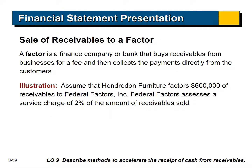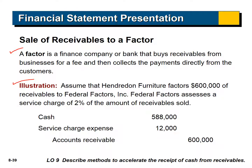The final way to dispose of a receivable is to sell it. If it takes too long to collect, you need your money now, so you can sell it to what's called a factor — a finance company like a bank or financial institution that buys receivables from businesses for a fee and then collects directly from the customer. For example, Hendreden Furniture factors $600,000 of receivables to Federal Factors Inc. Federal Factors assesses a service charge of 2% of the receivables sold. We remove the $600,000 receivable, record a 2% service charge ($12,000), and the difference is the cash received.